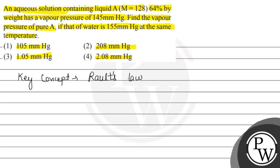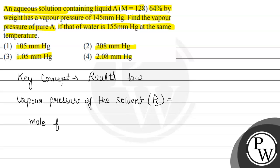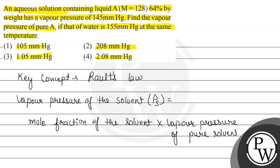Let us see what Raoult's Law states. It says that the vapor pressure of the solvent, represented by Ps, is equal to the product of the mole fraction of the solvent multiplied by the vapor pressure of the pure solvent. So Ps = X × P0, where P0 is the vapor pressure of the pure solvent.